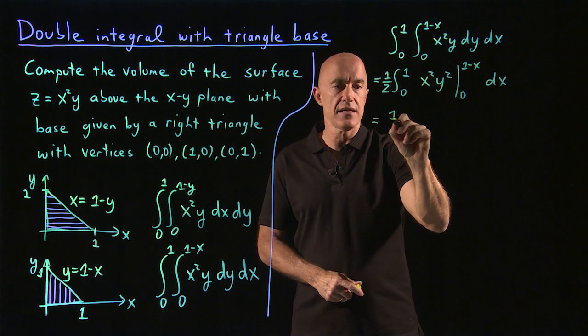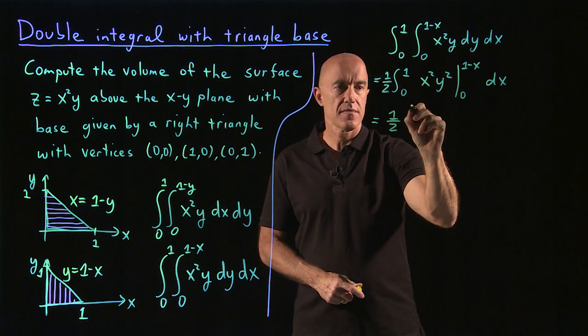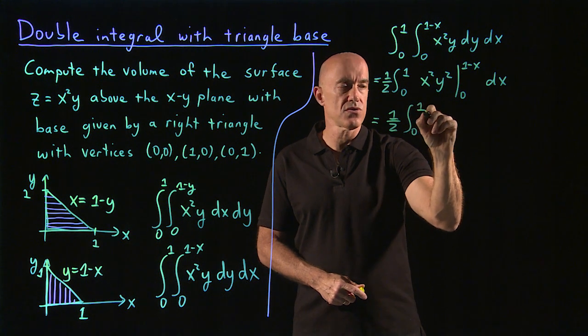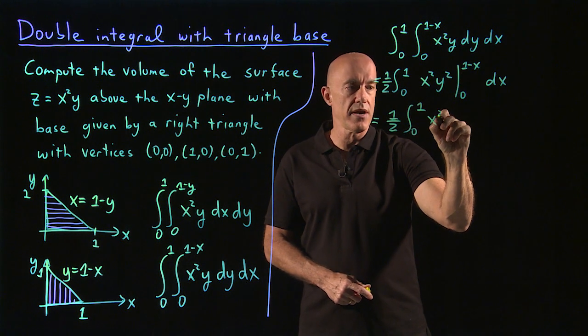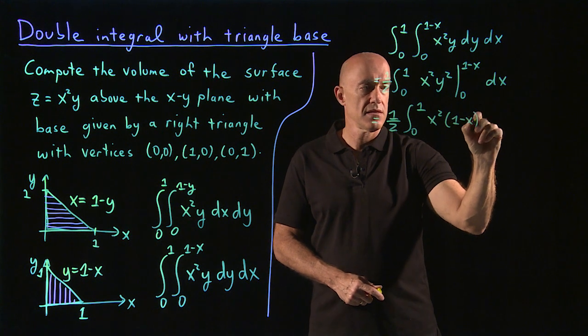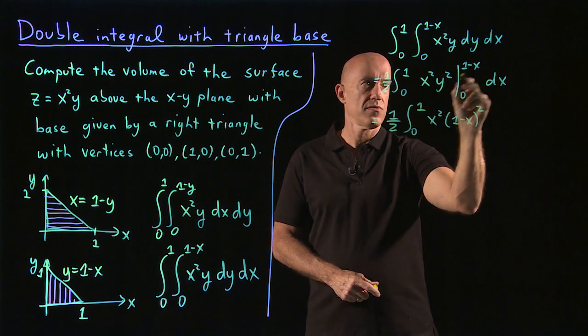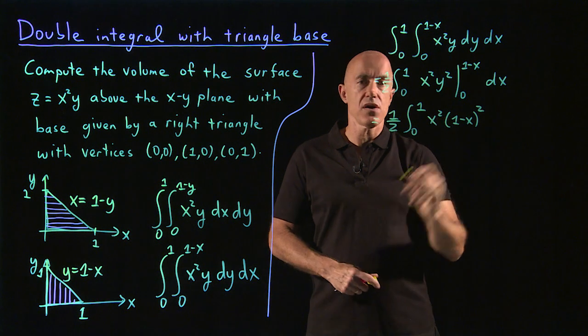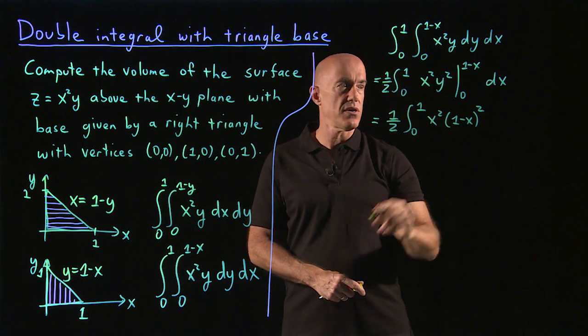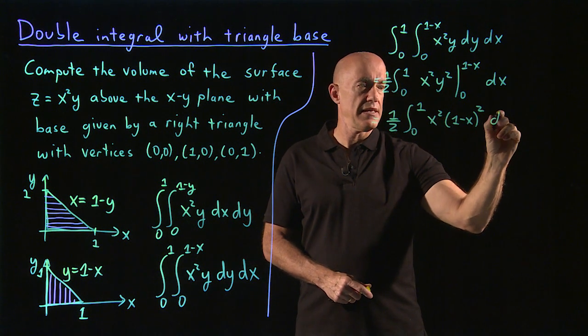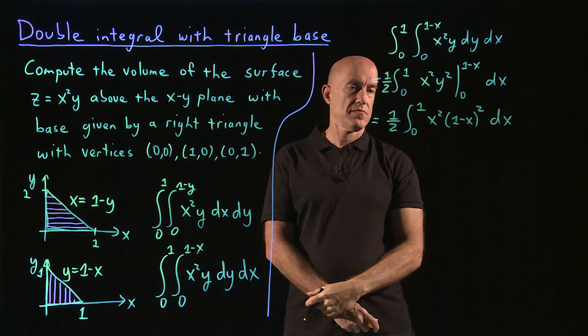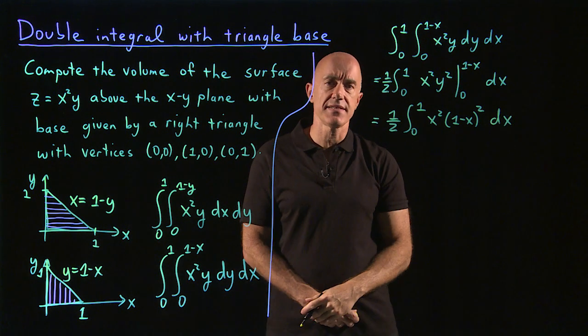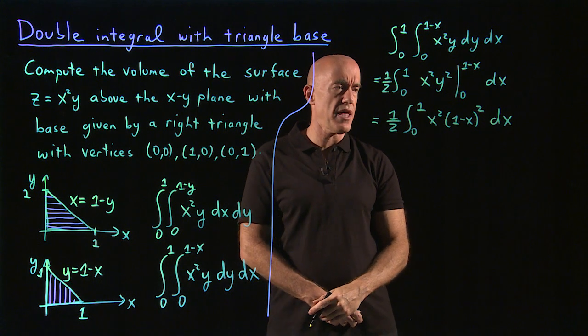We can substitute that in. So 1 half the integral from 0 to 1 of x squared times 1 minus x squared, minus 0. The lower limit here is 0, and that will be dx. We just have a single variable integral left.